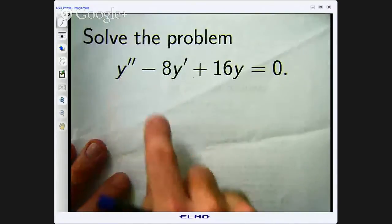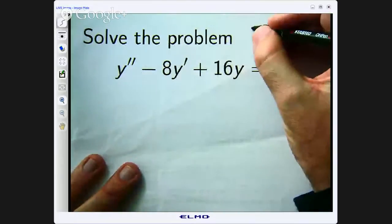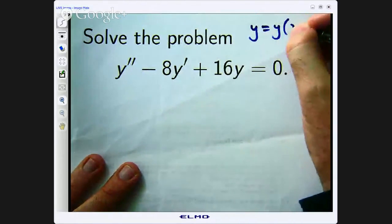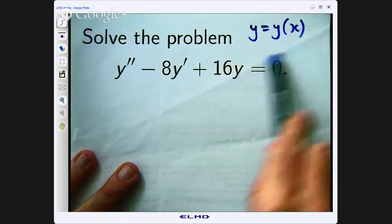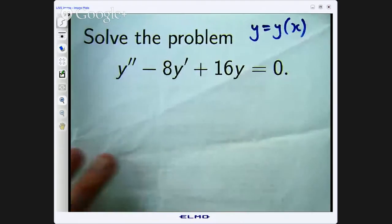Now the derivatives mean, sorry, the primes or the dashes means differentiation. Okay, so if y is a function of x, then y dash is dy dx and y double dash is d squared y dx squared.